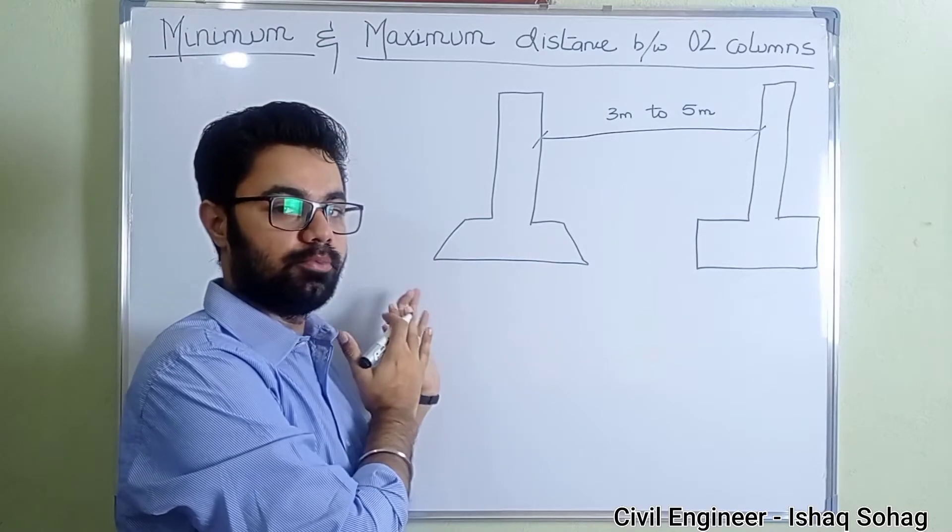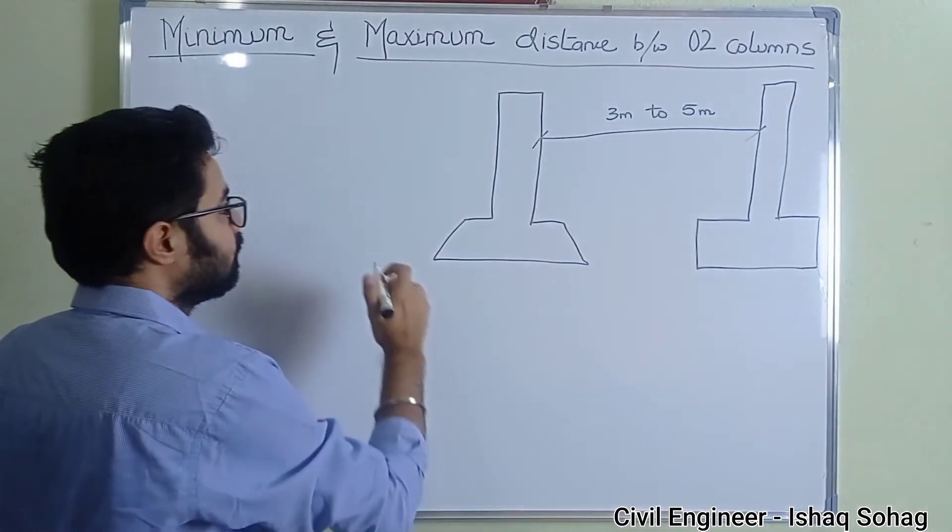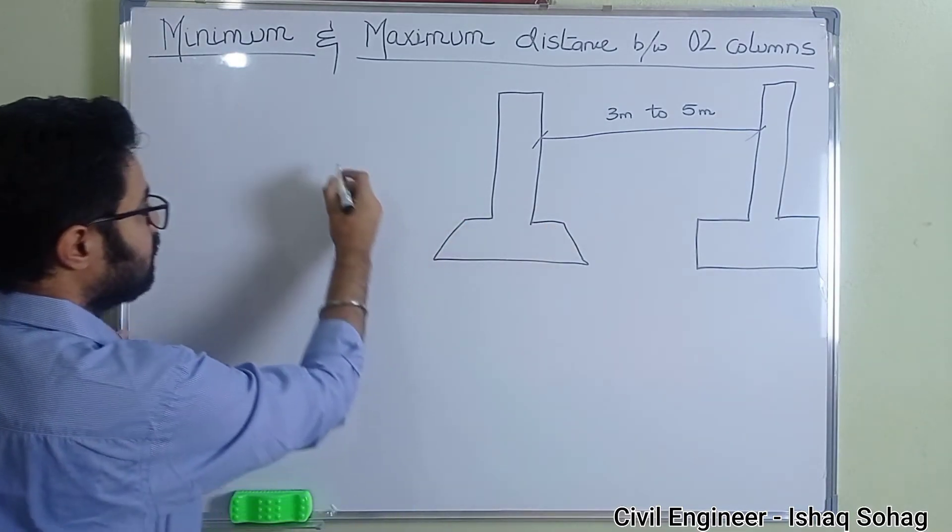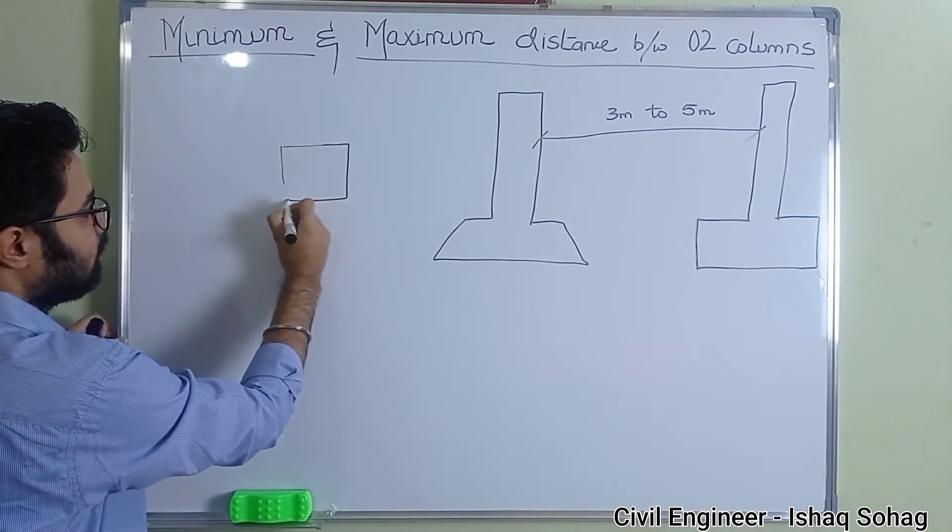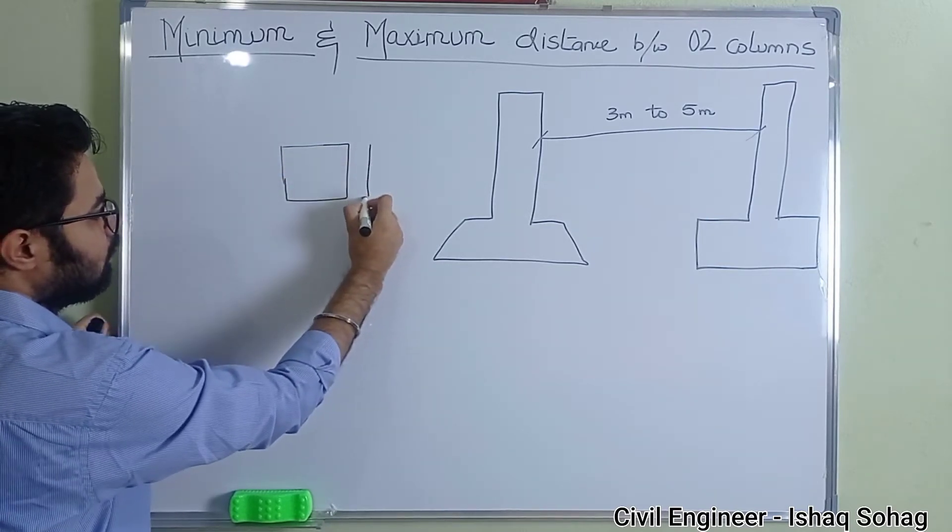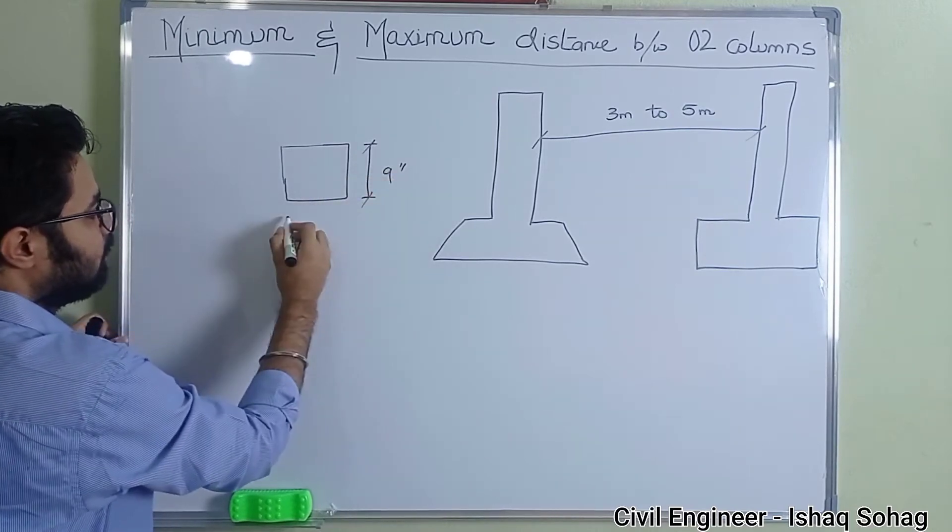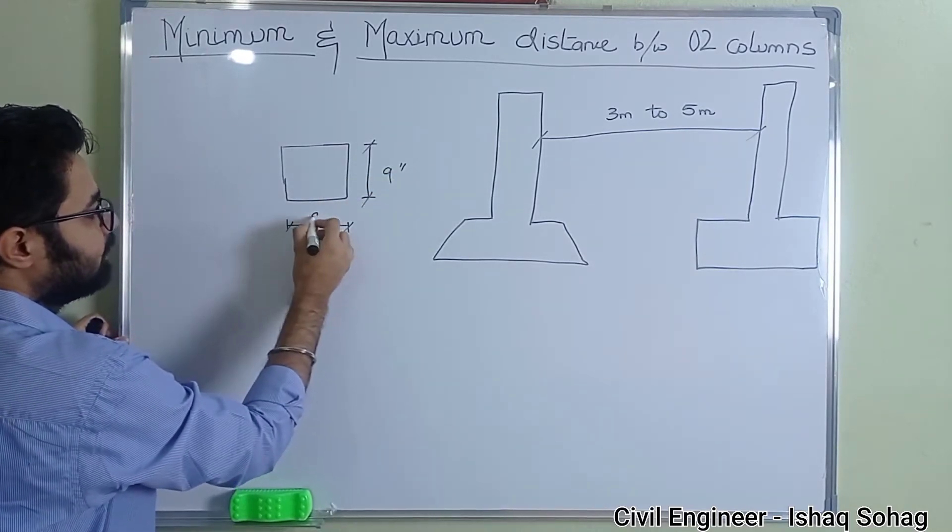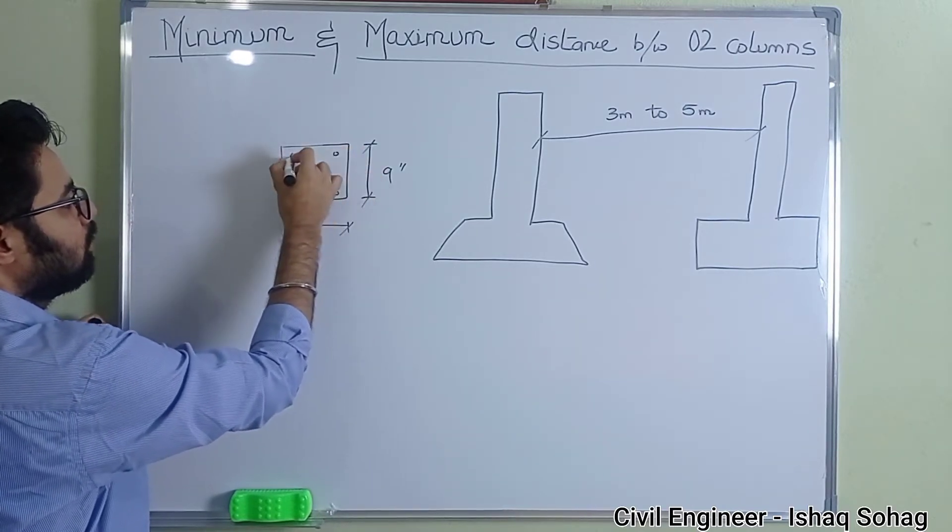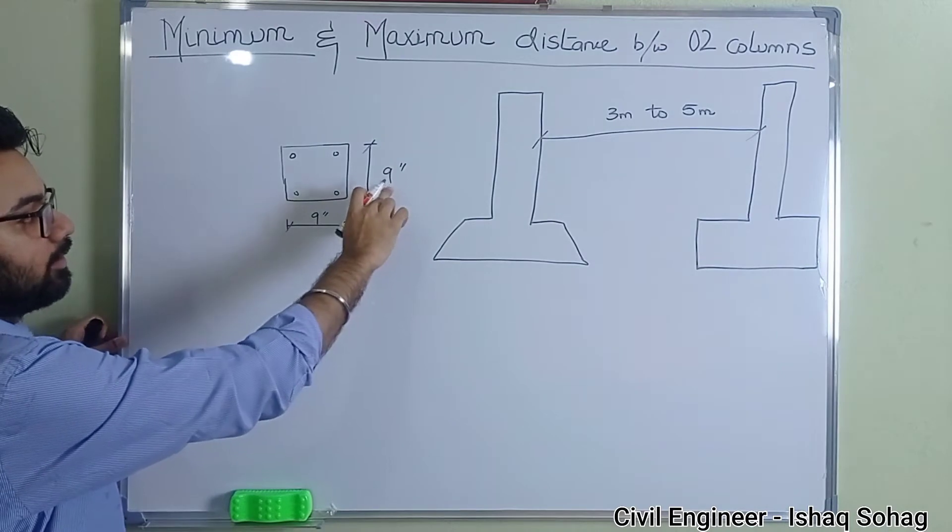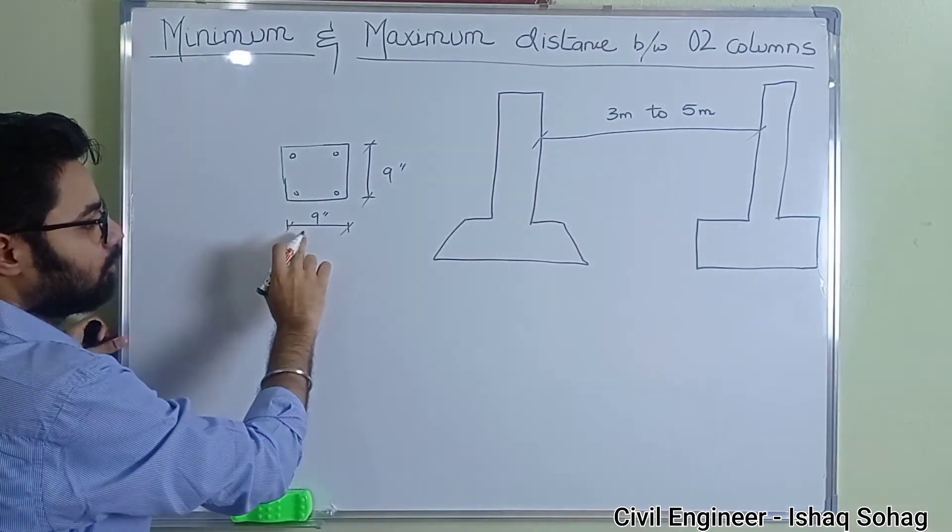That I'm going to brief here for you to understand. So for example, we are having a column dimension of nine by nine. It is nine inch by nine inch. Nine inch is equal to 225 millimeters, 225 millimeters.